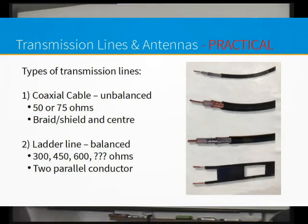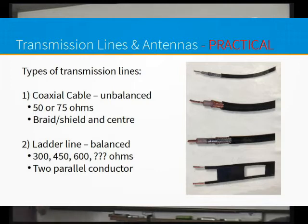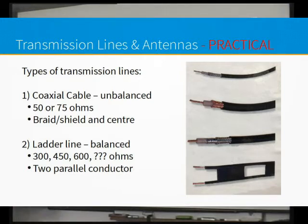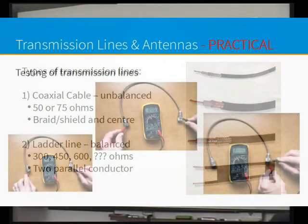On coax, if a signal cuts through that line, it'll hit the shield first before it hits the inside, so you'll get much more on the shield than on the inside - that's what the shield does. So coax is unbalanced. In the practical, we'll get you to identify which type it is and whether it's balanced or unbalanced.